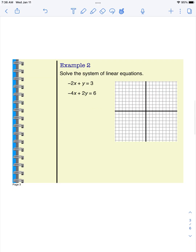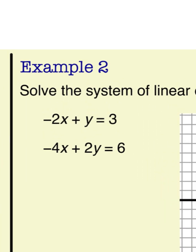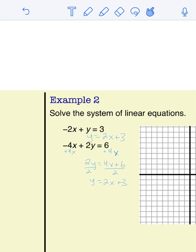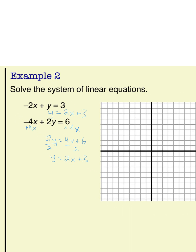To graph the next example we need to rearrange the equations. For the first one, negative 2x plus y equals 3 — we add 2x to both sides so it becomes y equals 2x plus 3. For the second equation, we first add 4x to both sides to get 2y equals 4x plus 6, then divide everything by 2 to get y equals 2x plus 3. Notice these equations are the same.